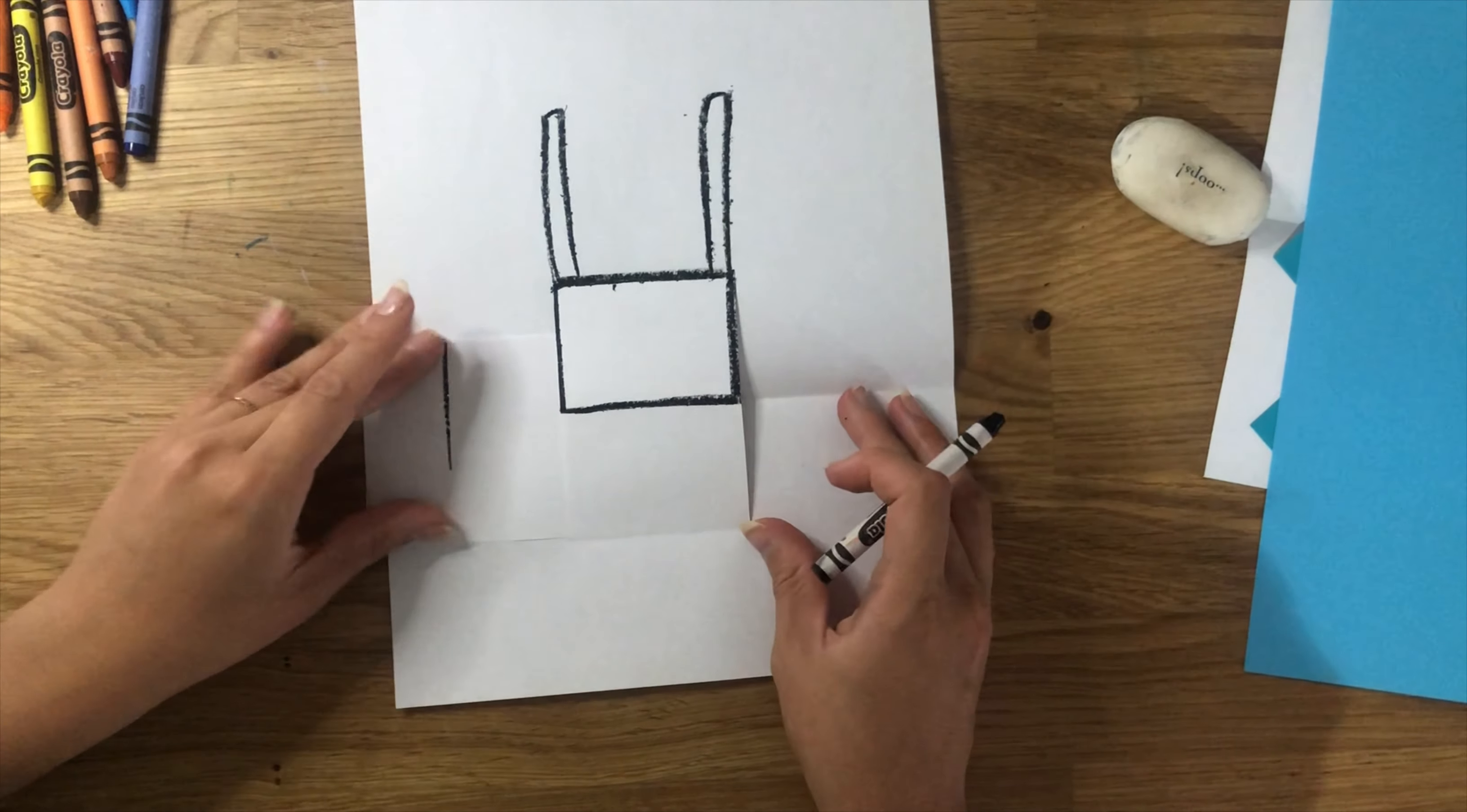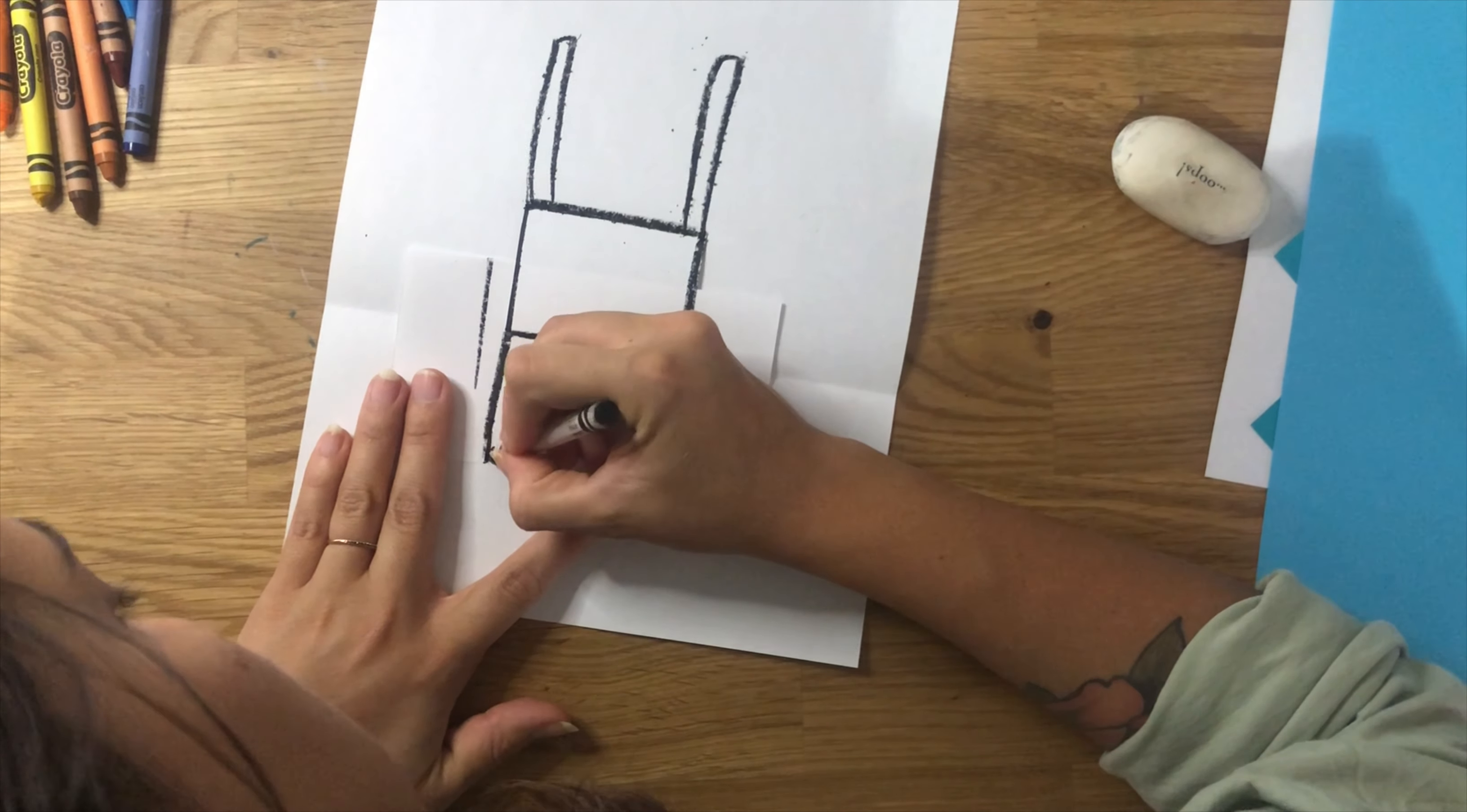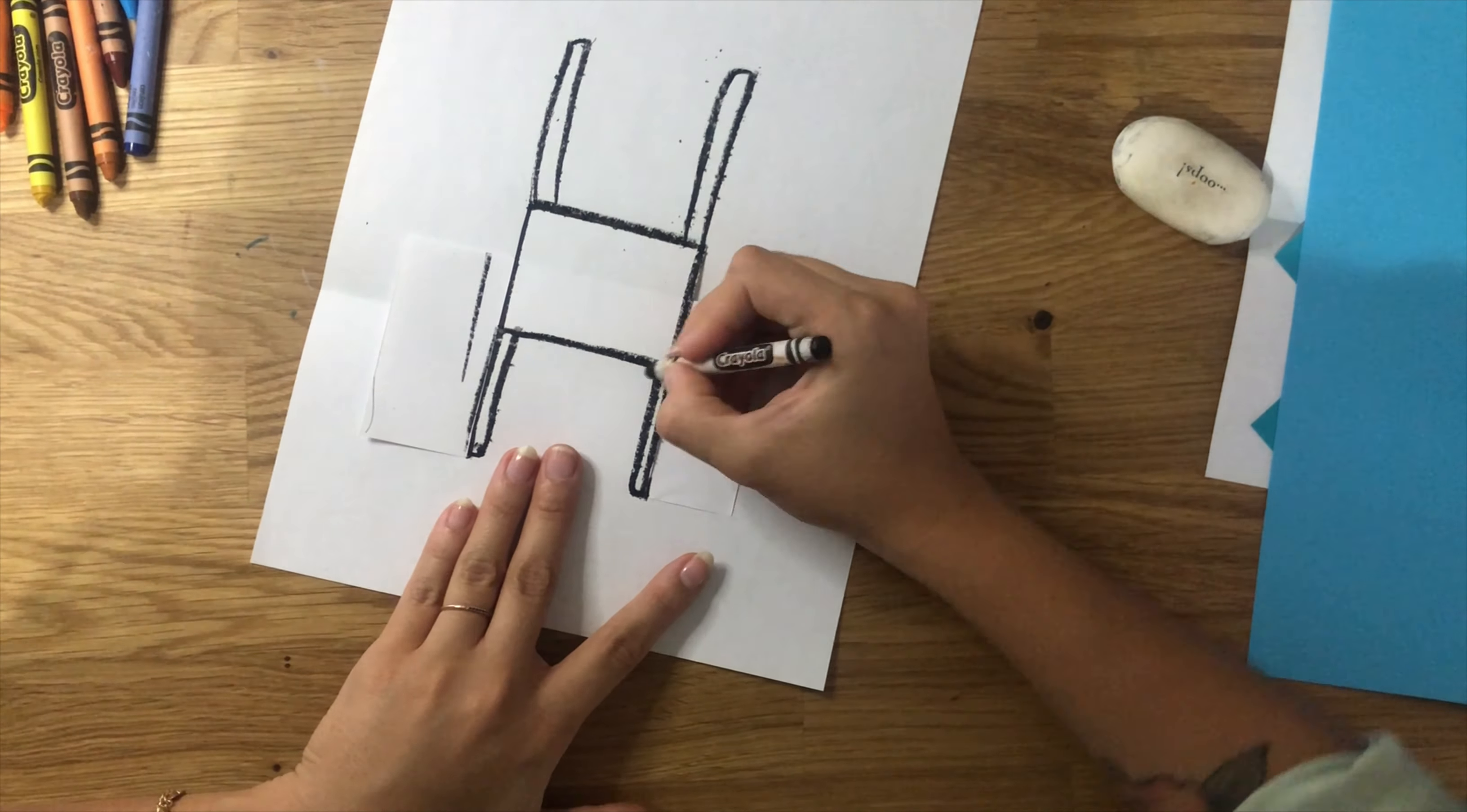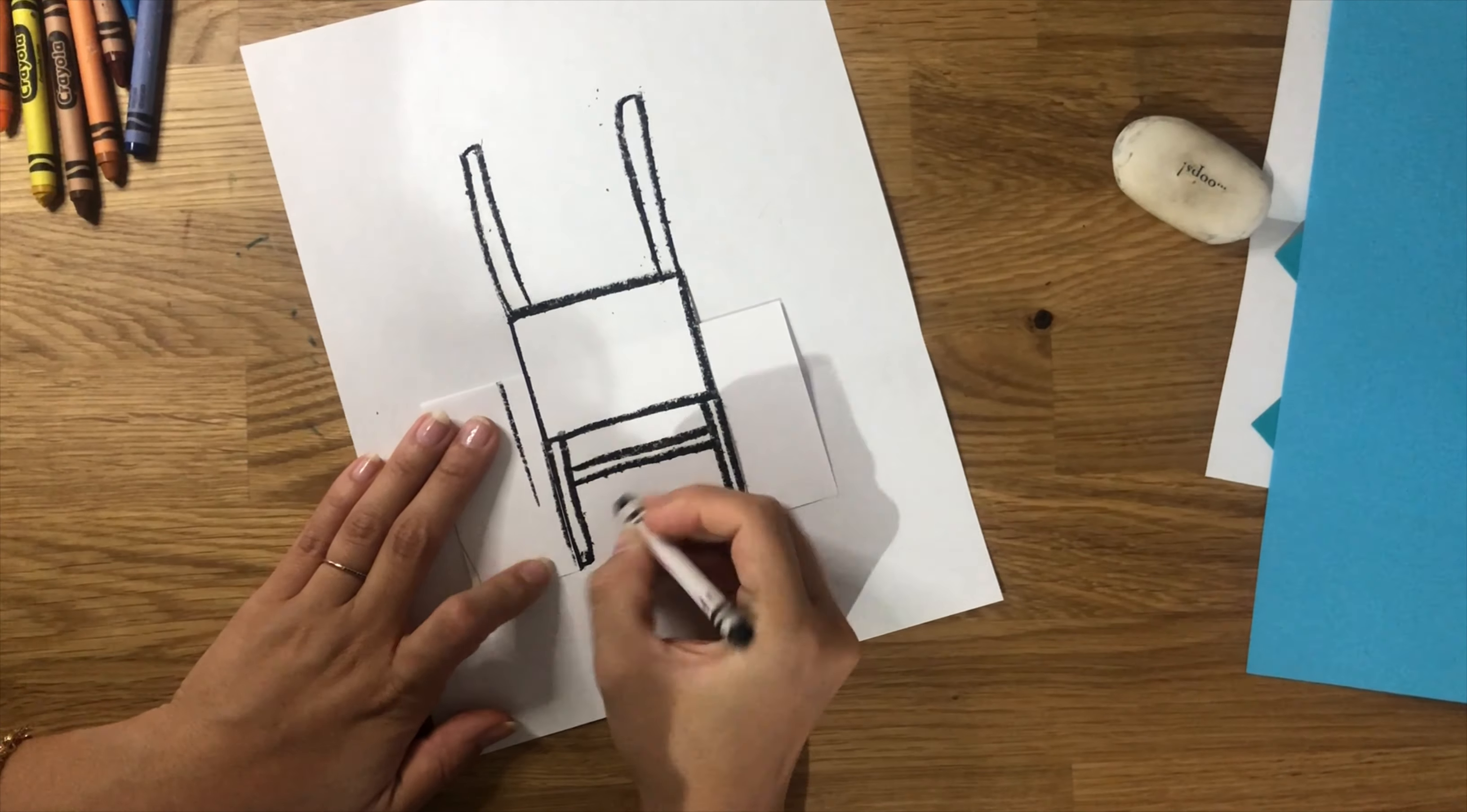For the front legs, make a super skinny rectangle that goes on a corner of the bottom of the square, following the line that the fold and the cutout give you. Remember to use your protective piece of paper so you don't have any extra marks on the background of your project.